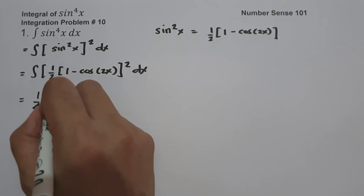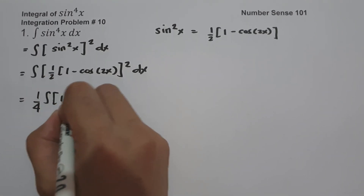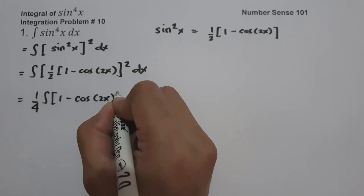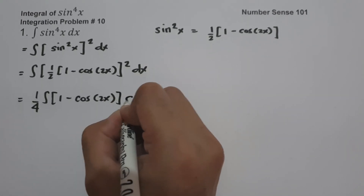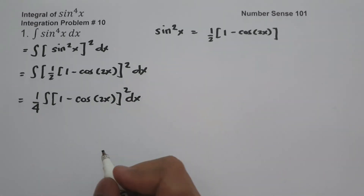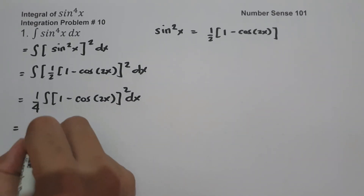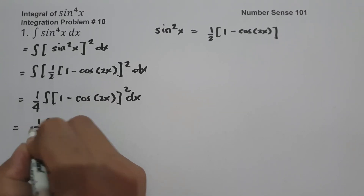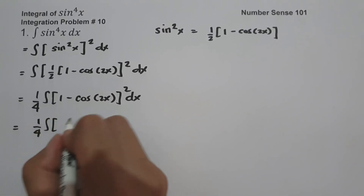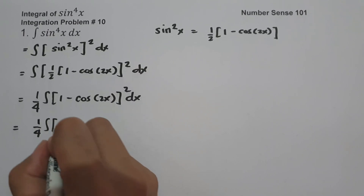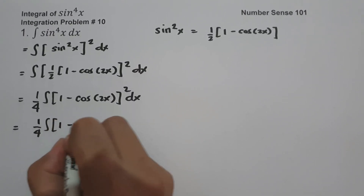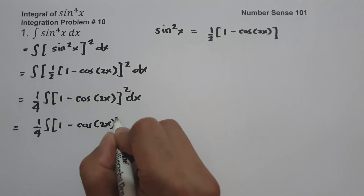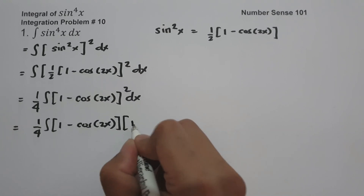This will be one fourth times the antiderivative of (1 minus cosine 2x)² dx. So let us rewrite this as (1 minus cosine 2x) multiplied by itself.